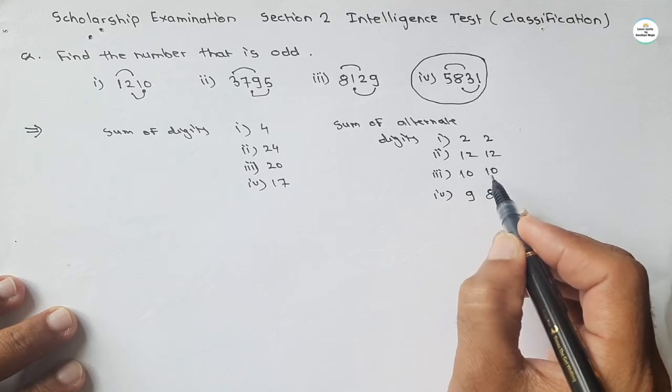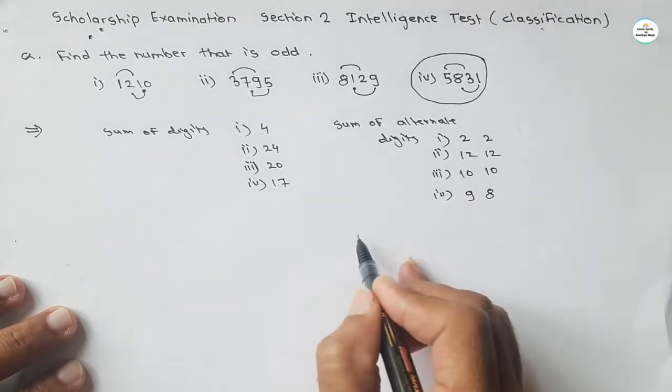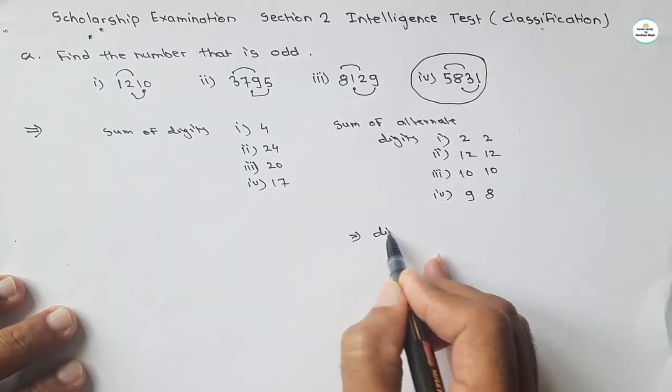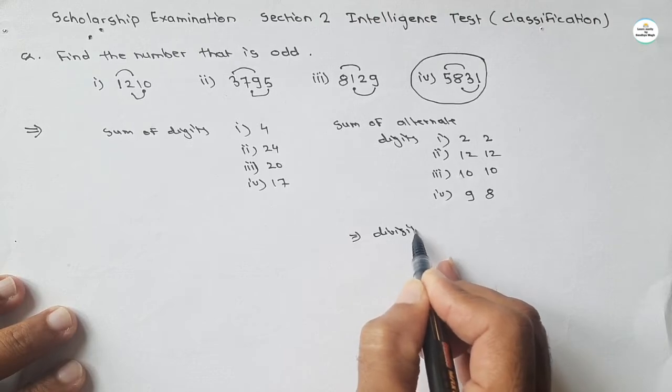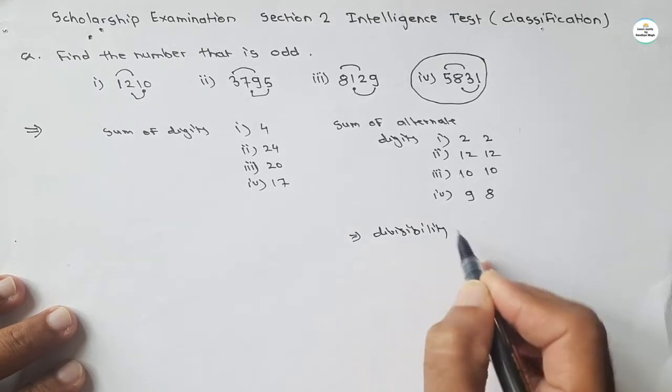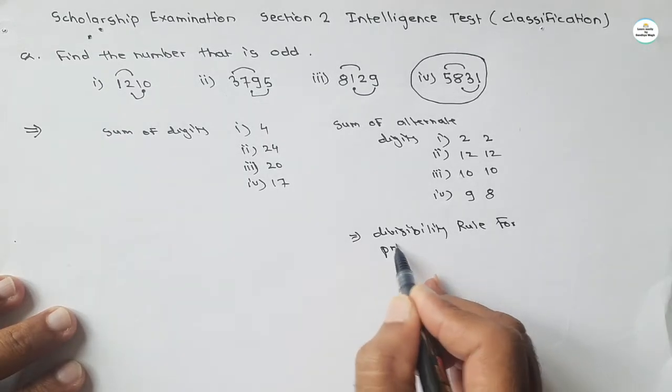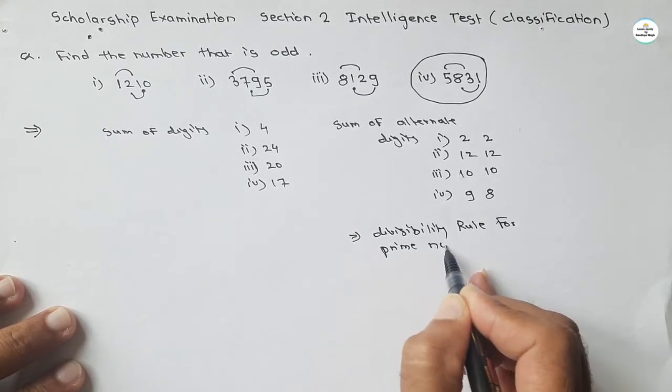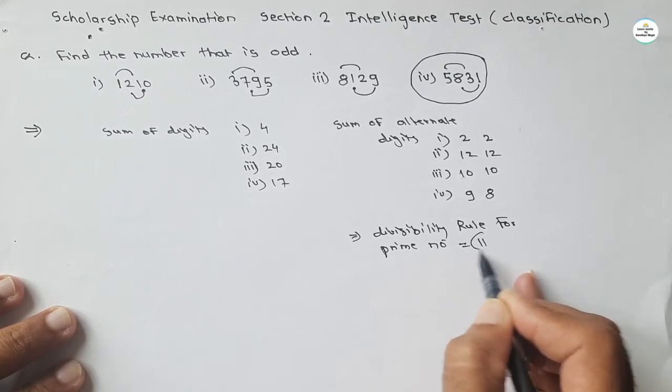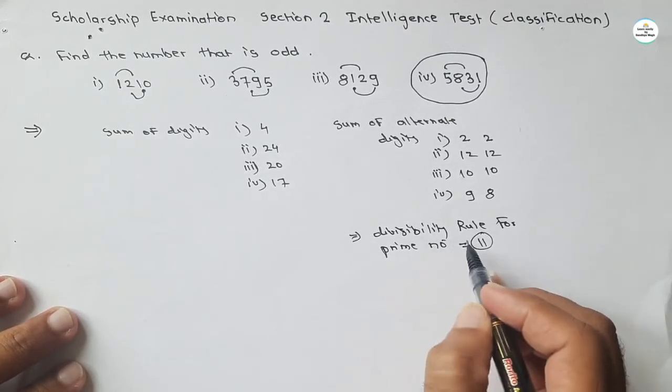this is a divisibility rule for 11. What is this? This is a divisibility rule for prime number 11. What this rule says?